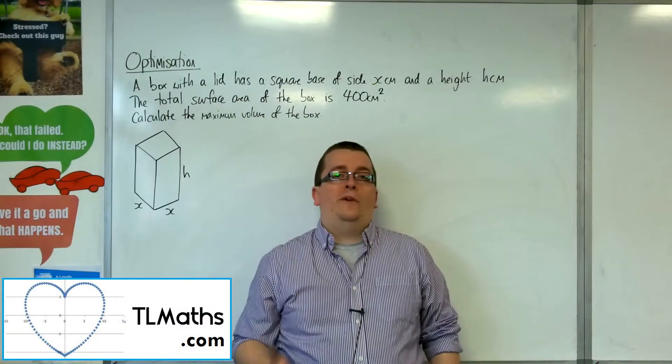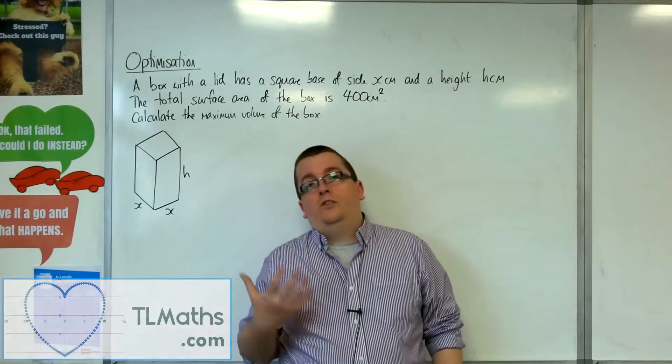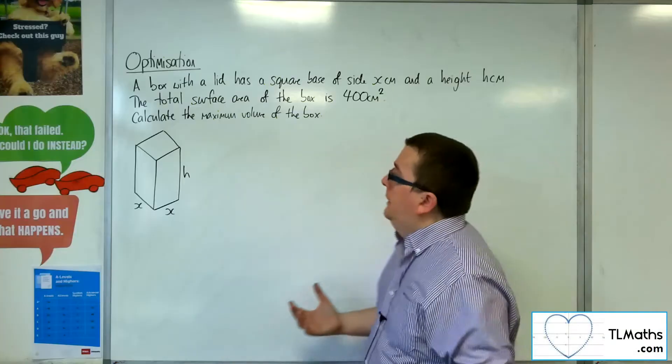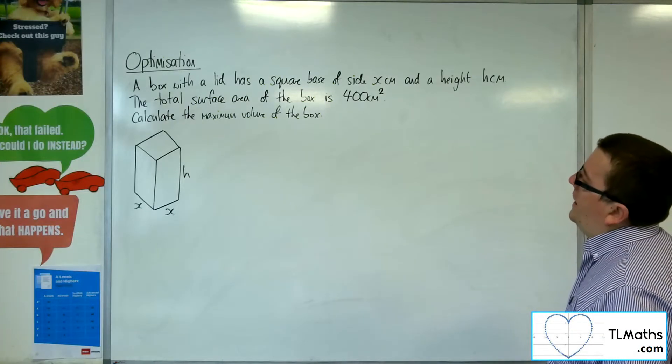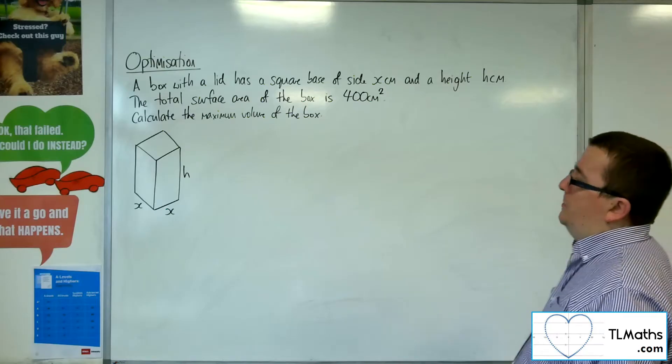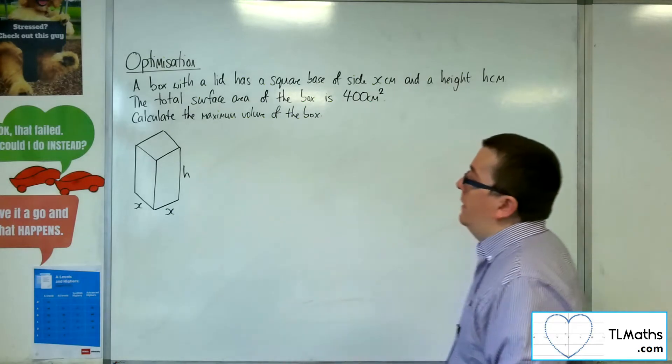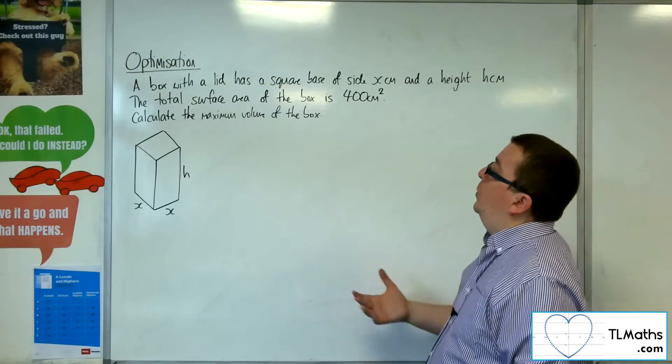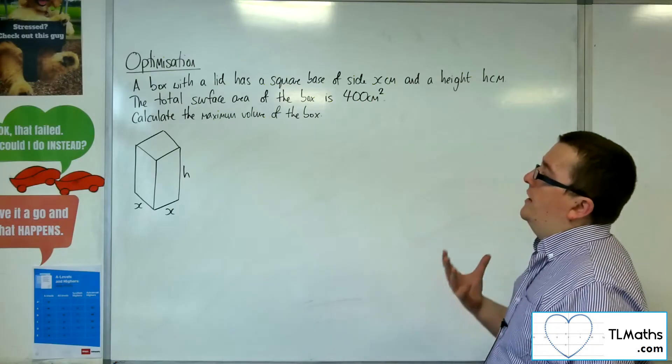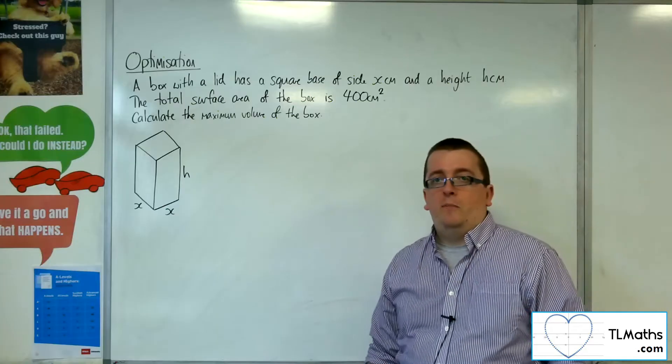In this video we're going to go through a slightly more tricky optimization problem. We've got a box with a lid that has a square base of side x centimeters and a height h centimeters as shown in the diagram. The total surface area of the box is 400 square centimeters. Calculate the maximum volume of the box.